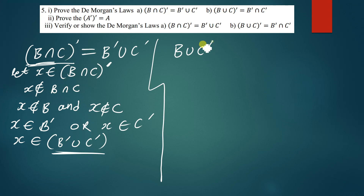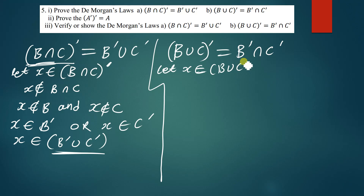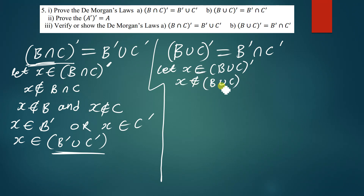The second De Morgan law says (B ∪ C)' = B' ∩ C'. To prove this, we again introduce an arbitrary element. Let x be a member of (B ∪ C)'. If x is a member of (B ∪ C)', it means that x is not a member of B ∪ C.